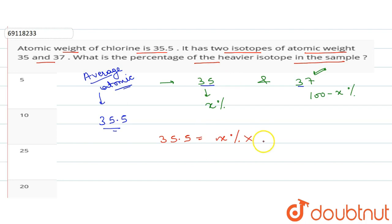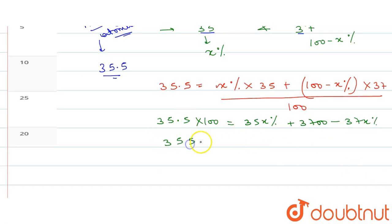This means that the average atomic weight 35.5 will be equal to the first isotope's atomic weight times its abundance, 35 times x percent, plus the second isotope's atomic weight times its abundance, 37 times (100-x) percent. 35.5 times 100 is equal to 35x plus 3700 minus 37x.